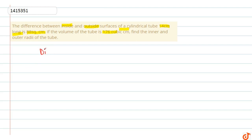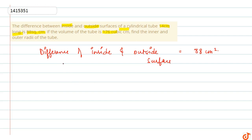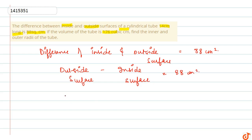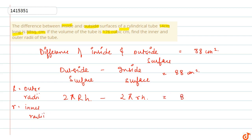The difference of the inside and the outside surface is equal to 88 cm square. The outside surface formula is 2π capital R h, where R is the outer radius, minus 2π small r h, where small r is the inner radius. This difference equals 88 cm square.